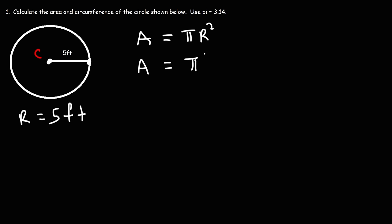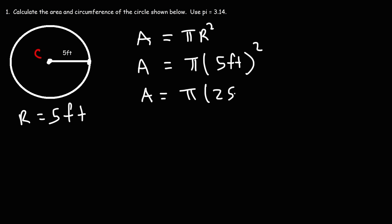So we have pi times 5 feet squared. 5 squared is 5 times 5, which is 25. Feet times feet gives you square feet, so the units of area are always square units — square inches, square feet, square yards, and so forth. The exact answer for the area of the circle is 25 pi square feet.